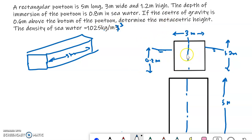And the center of gravity is 0.6 meter. Let this point be center of gravity G. That is from bottom, suppose if this point is A, from bottom A to G the height is 0.6 meter. AG is 0.6 meter. Determine the metacentric height.